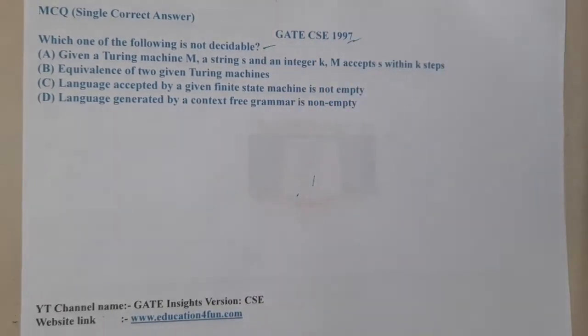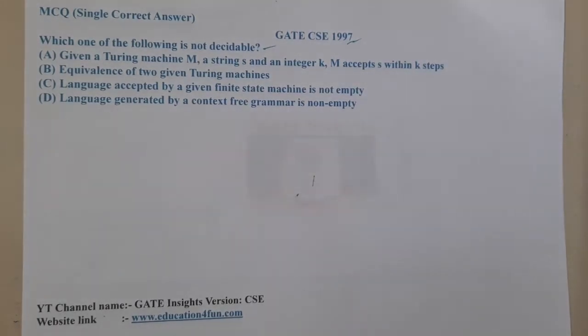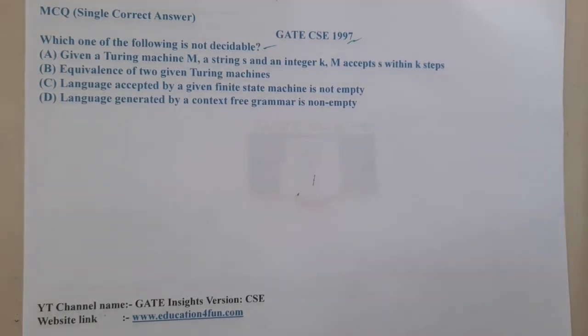We are in search of a non-decidable thing. Option A says: given a Turing machine M, a string s, and an integer k, M accepts s within k steps.